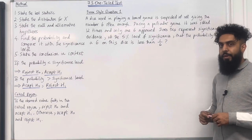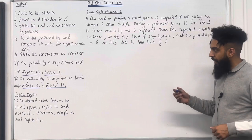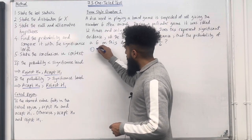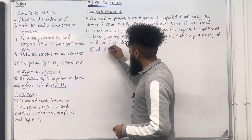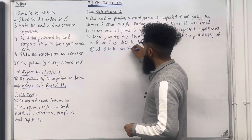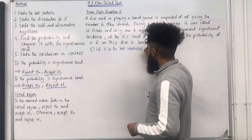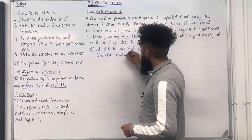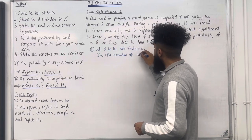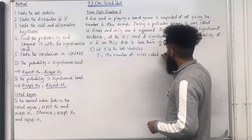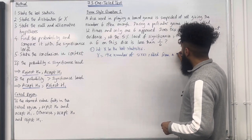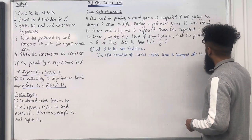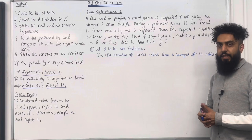that the probability of a 6 on this dice is less than 1 over 6? Now I'm going to go through the hypothesis testing step by step. Step 1: we're going to state the test statistic. Let X be the test statistic. So in this scenario, X is the number of 6s rolled from a sample of 12 rolls.